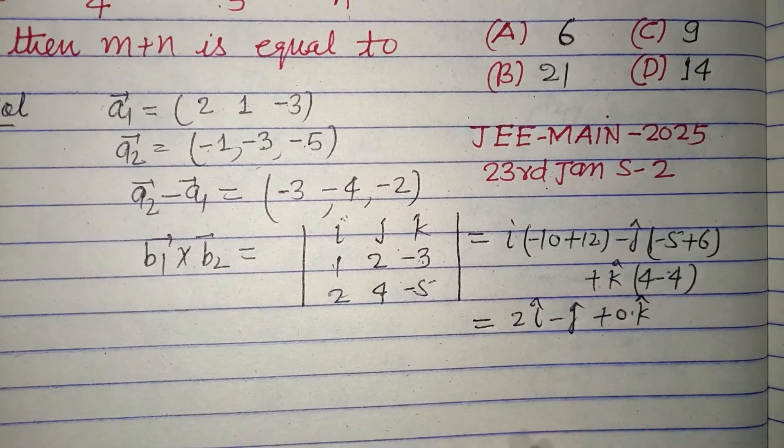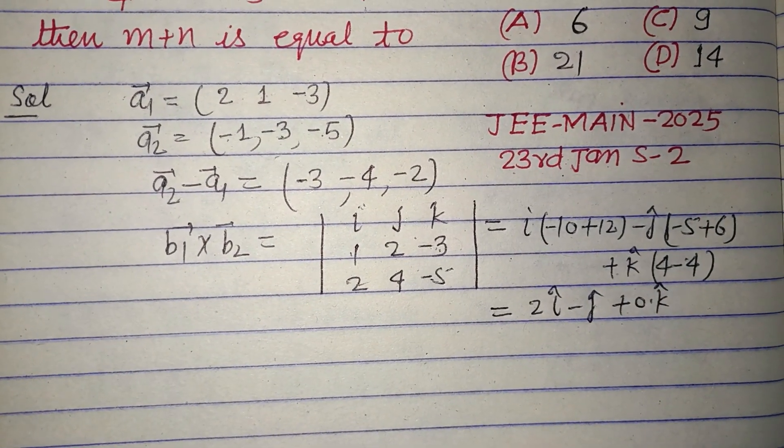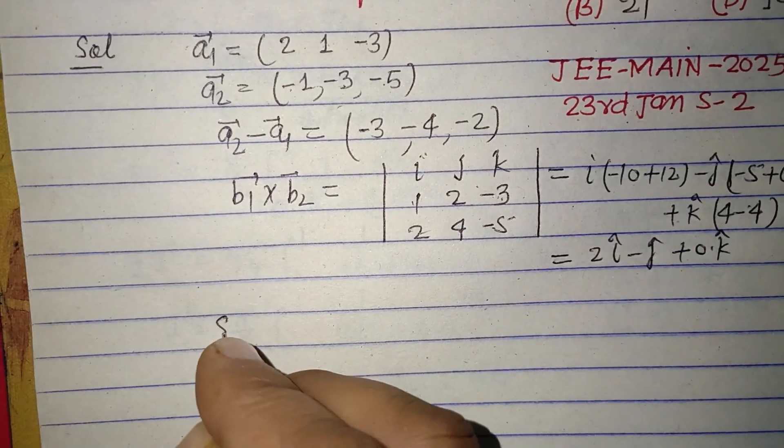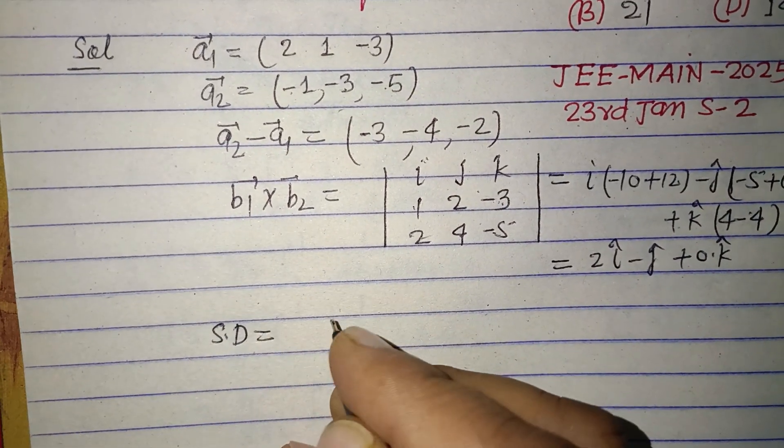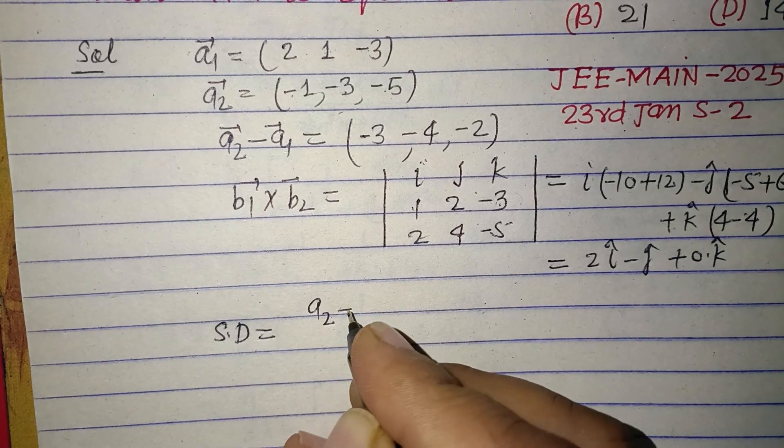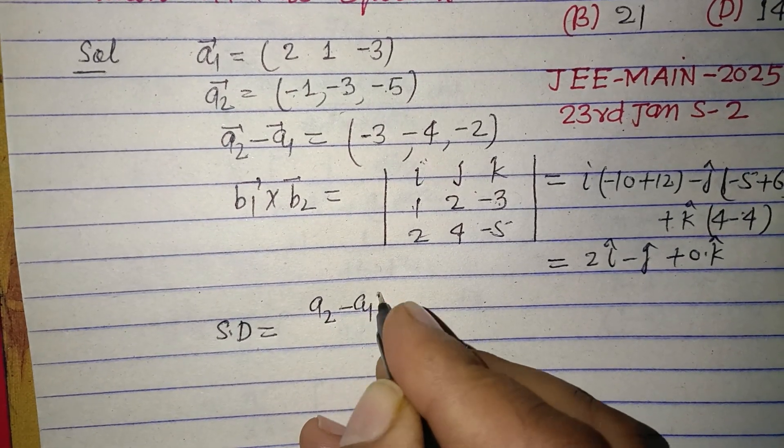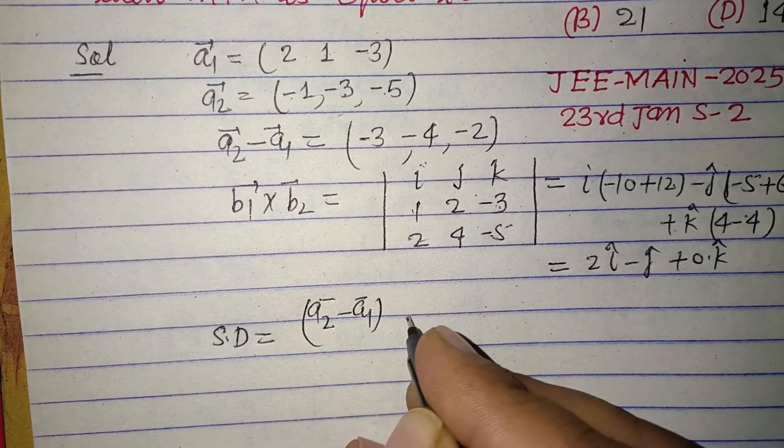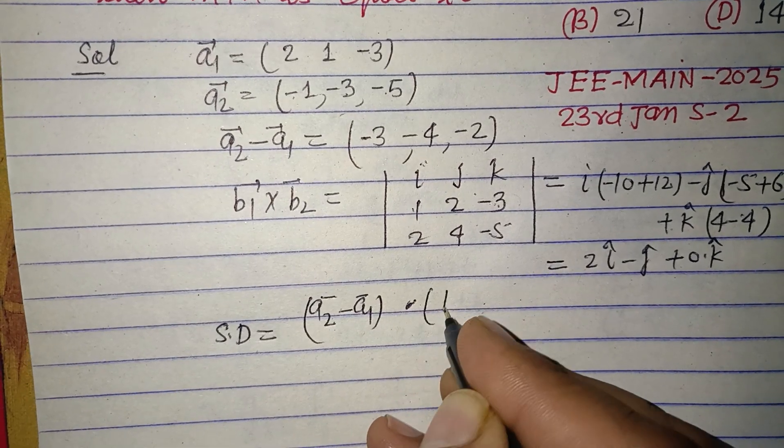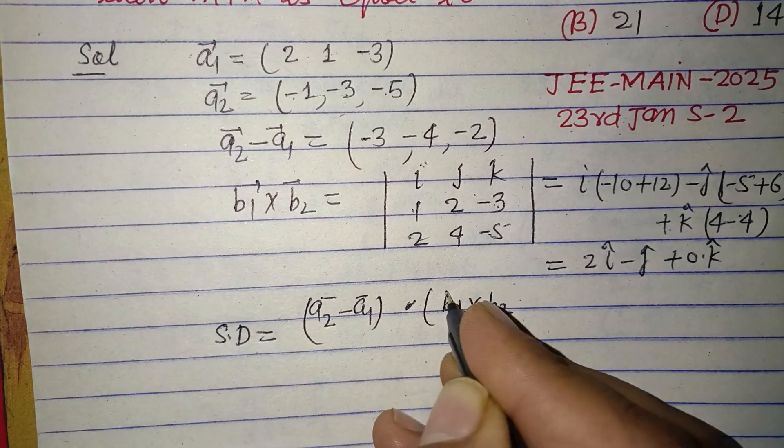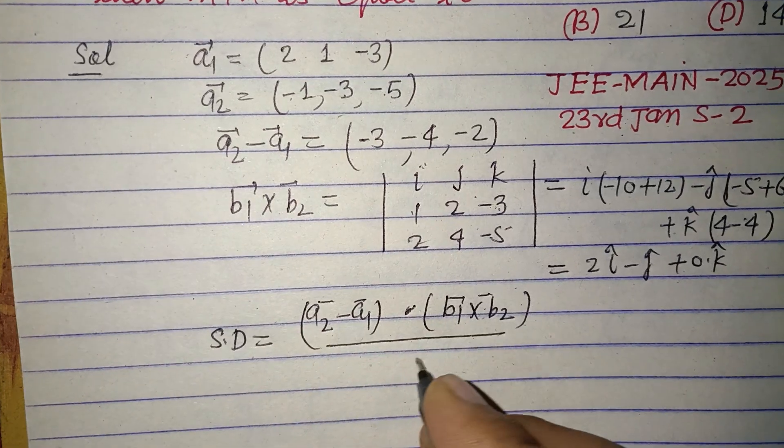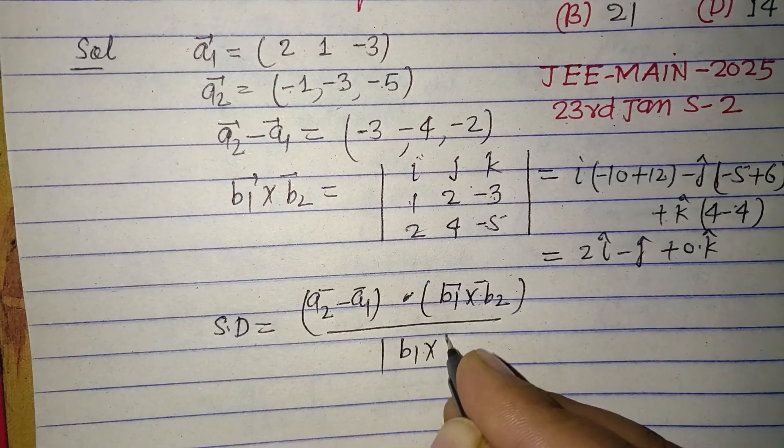Now shortest distance between the lines, you know that: SD equals (a2 minus a1) dot product of (b1 cross b2) upon the mode of (b1 cross b2).